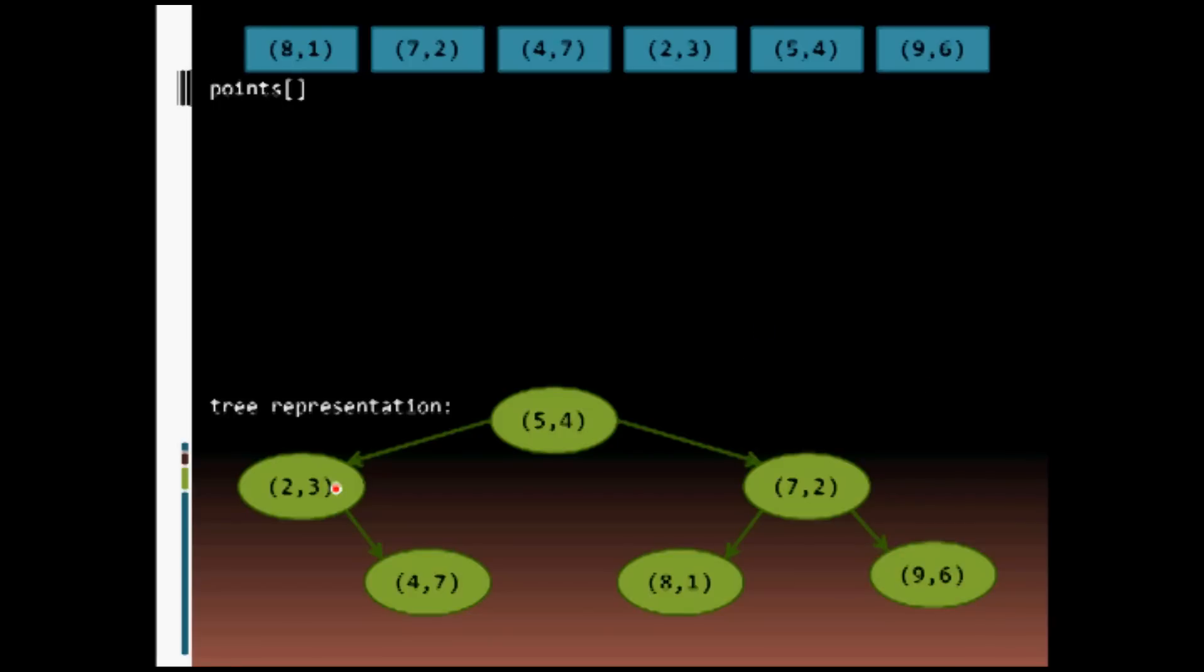So here's our tree representation of what a KD tree would look like. The root node is 5,4, because if we were to sort this list of points at the top, 5,4 would be the median in the X dimension.